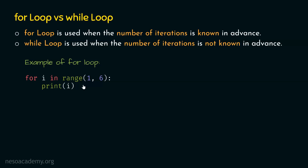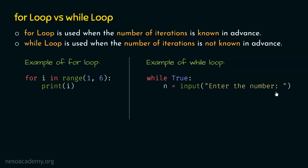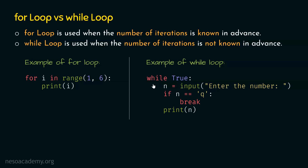Now let's take an example of while loop: while True, n = input('enter the number'). Then we check if n is equal to 'q', then break; otherwise, print n. Here we are asking the user to enter a number. If the user provides 'q', then we break this loop and it terminates; otherwise, we print the number provided by the user. The termination of this loop depends upon the user input, so the number of iterations is not known in advance. This shows when the number of iterations is unknown, we use while loop.